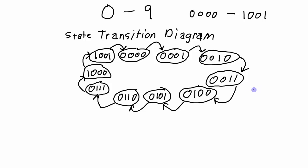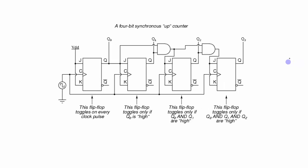All of this information in the state transition diagram can be moved into a state transition table, which allows us to see in another format how the states transition from one state to another. Ultimately what we're going to design is going to be similar to the standard counter but a little bit different because we're truncating the sequence. We will still have four flip-flops, but the logic controlling the inputs to the flip-flops is going to be different because of the truncated sequence.